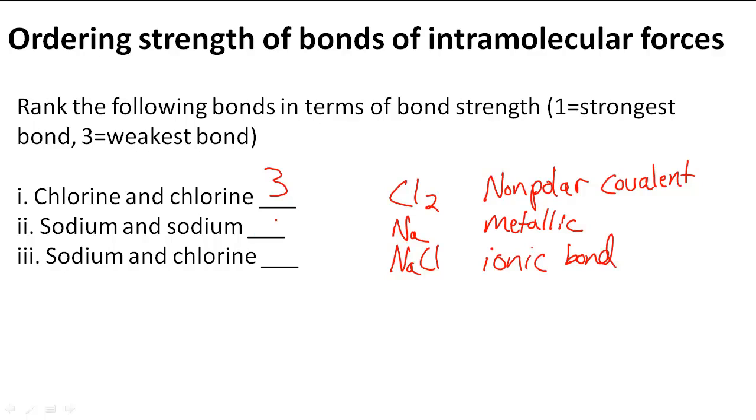Number two, sodium and sodium. Metallic bonds actually are a little bit above polar covalent bonds, which I could put right here. Even though we don't have a polar covalent bond there, it helps me to remember the order that they go in. Nonpolar, polar, and metallic. So metallic is the next strongest. So I'm going to put two here.